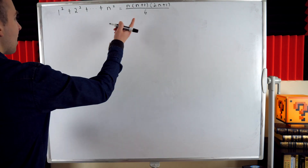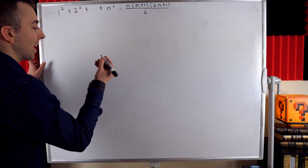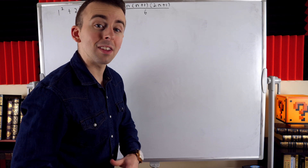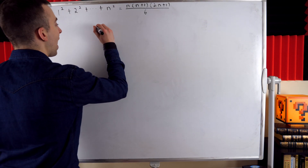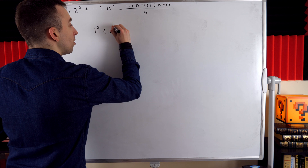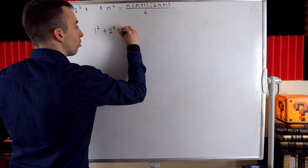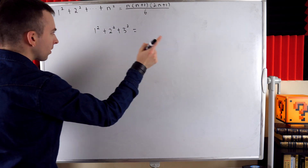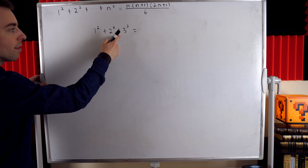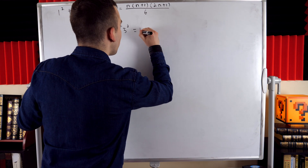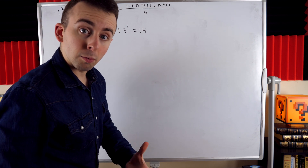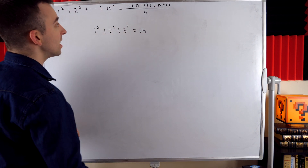Let's see a quick example of this equation in action before we get into the proof. Say n equals 3, so the sum of the first 3 squares. What's that equal to? 1 squared plus 2 squared plus 3 squared — that's 1 plus 4, which is 5, plus 9, which is 14. So the sum of the first 3 squares is equal to 14.